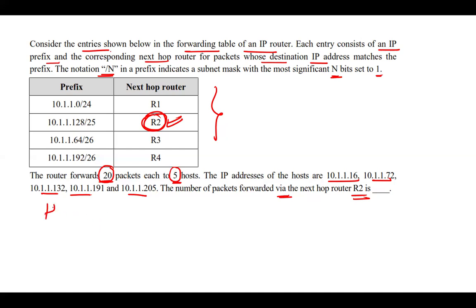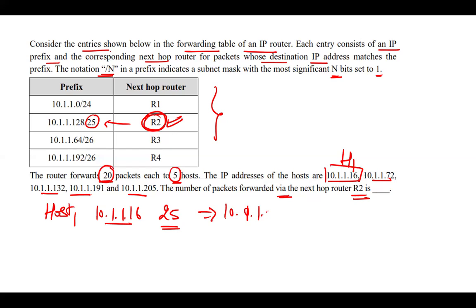For host 1, the IP address is 10.1.1.16. When masked with a 25-bit net mask — because we need to check against next hop router R2 — we get 10.1.1.0. So the packet to host 1 is not forwarded by router R2, because it is not matching with the R2 prefix entry.